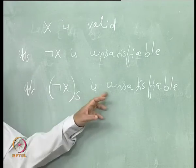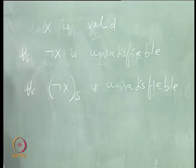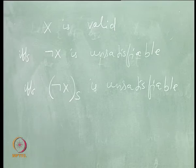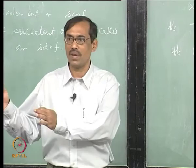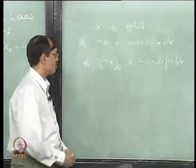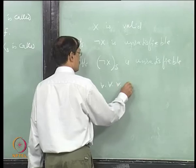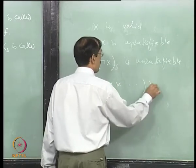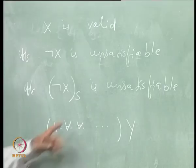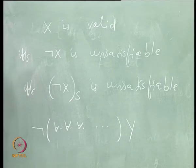If not-x subscript S is unsatisfiable, then x is valid. Now look at not-x_S — how will it look? Take any formula Y subscript S. That will be for-alls and then some formula. In not-x_S also you will get something like ∀ some variables and then some formula. This is unsatisfiable if and only if the negation of this is valid.